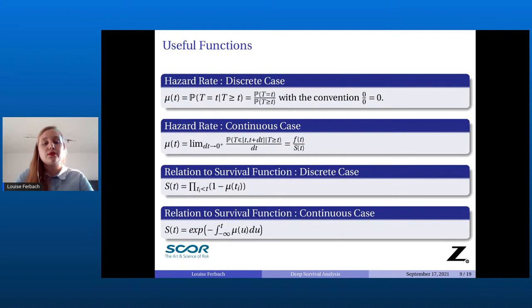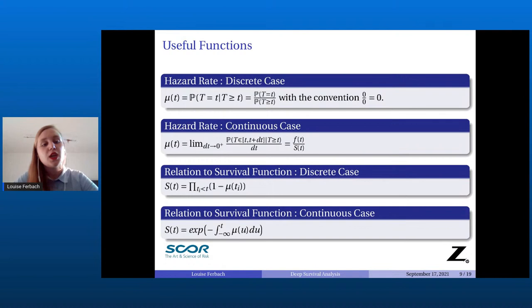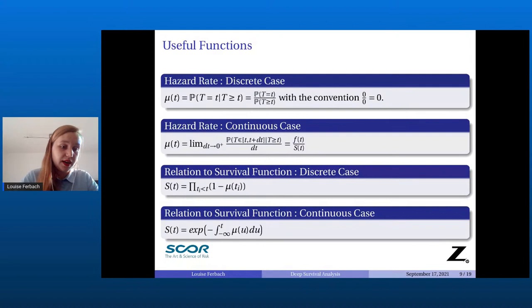The relation between the hazard rate and the survival function is intuitive in the discrete case. The probability of reaching age 50 is the probability of not dying at age 2 knowing you didn't die at age 1, multiplied by the probability of not dying at age 3 knowing you didn't die at age 2, and so on. So you have a product for all ages before the target age of 1 minus the hazard rate — the idea of a security rate.